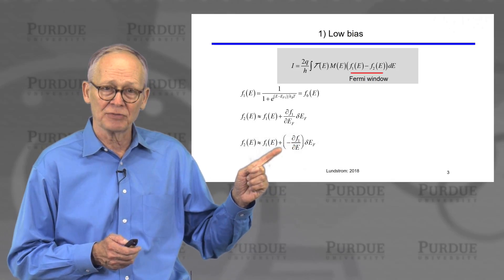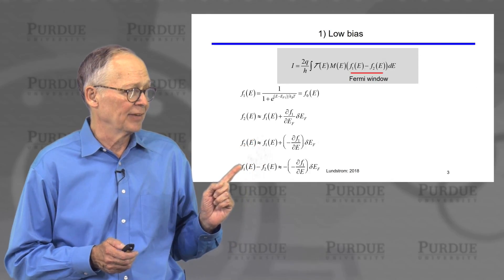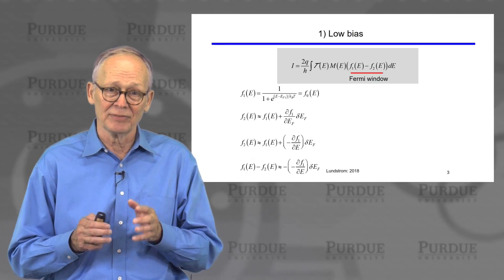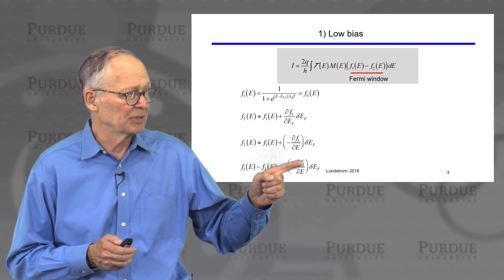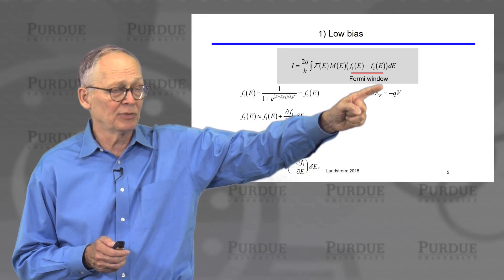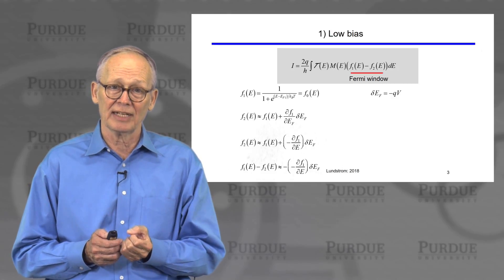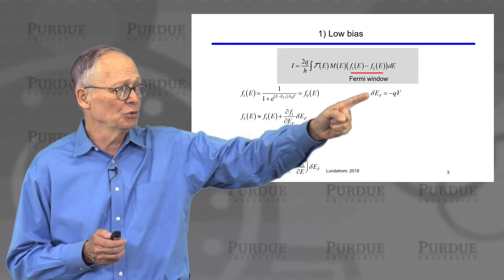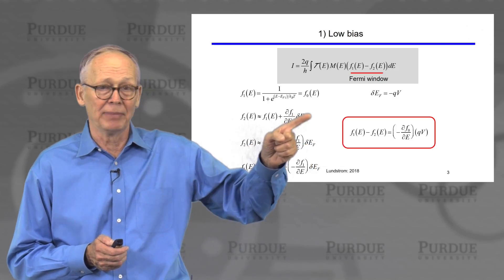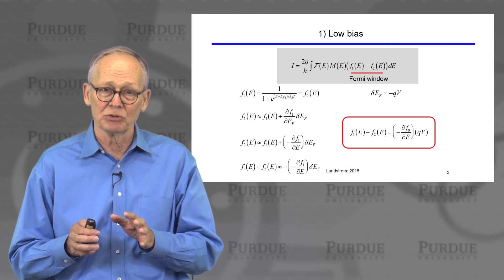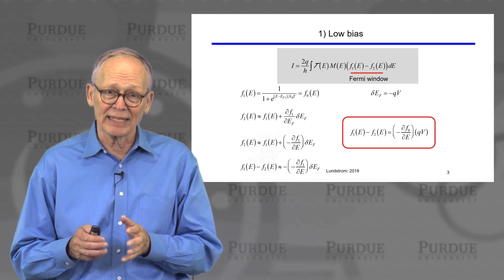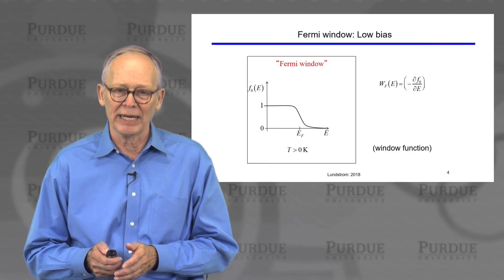Now we have a Taylor series expansion for F2. What we're interested in is evaluating F1 minus F2 — that's our Fermi window. The result is minus the derivative of F1 with respect to E, times the difference in Fermi levels between the two contacts. A positive voltage lowers the Fermi level in contact two, so the difference in Fermi levels is minus q times the voltage. Therefore F1 minus F2 is simply minus dF0/dE times q times the voltage. That's our low bias simplification.